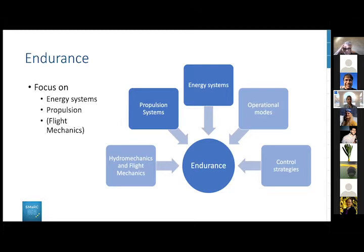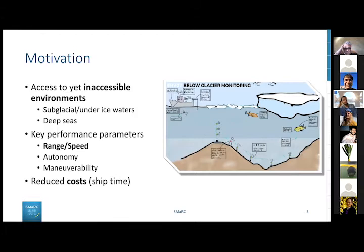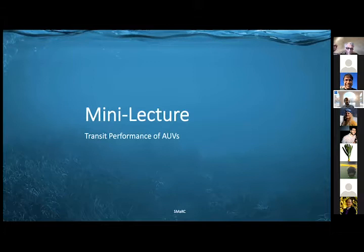Why is it important that we increase the endurance of AUVs? One of the key goals we want to achieve in SMARK is to be able to go into environments which people have not accessed before, for example under glaciers, the polar and Antarctic and Arctic ice caps, or in very deep sea environments. The key performance parameters are range as a very first one, but also autonomy and maneuverability. As a nice side effect, by increasing the range we also reduce the required ship time, which makes AUV operations much more affordable.